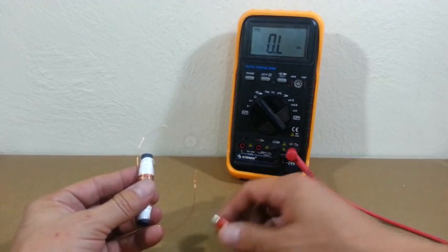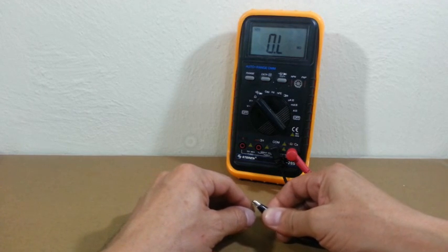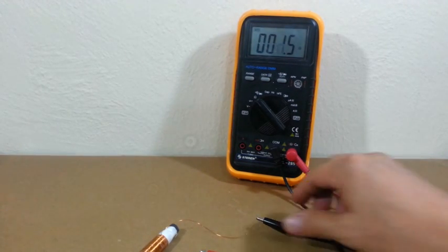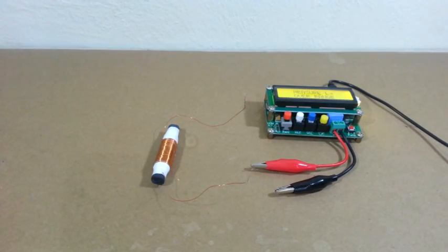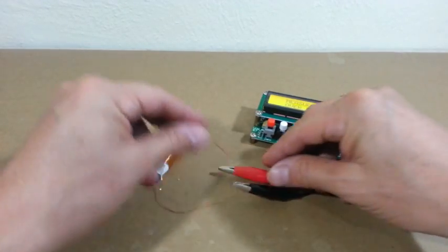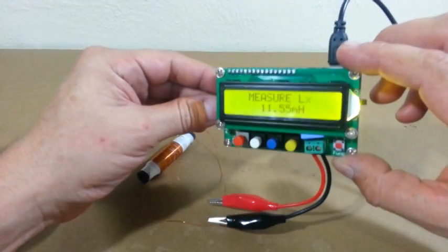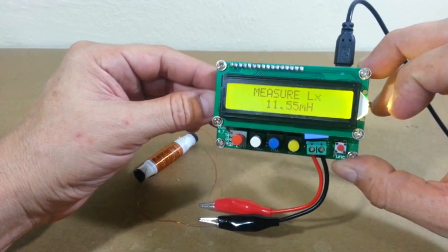As a reference, let me check what is the resistance of the secondary. We can see that is about 6.5 ohms. Let me now check the inductance. Inductance is 11.5 millihenries.